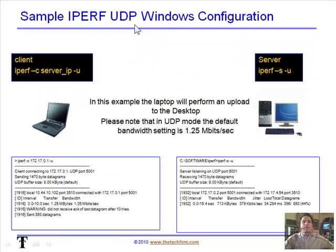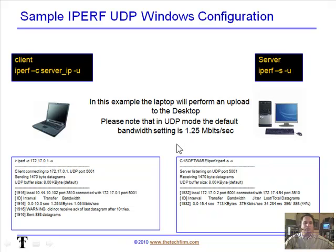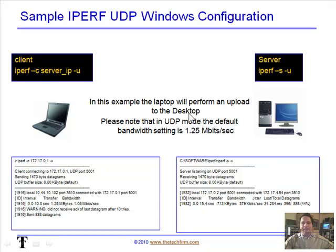Now moving on to UDP. People use UDP and don't realize it — all voice, video, and some latency-sensitive applications are UDP-based, so it's useful to use iPerf to simulate UDP over your network. We can use different port numbers if you have policy-based routing or packet shaping, and it's a great way to test packet loss and packet latency.